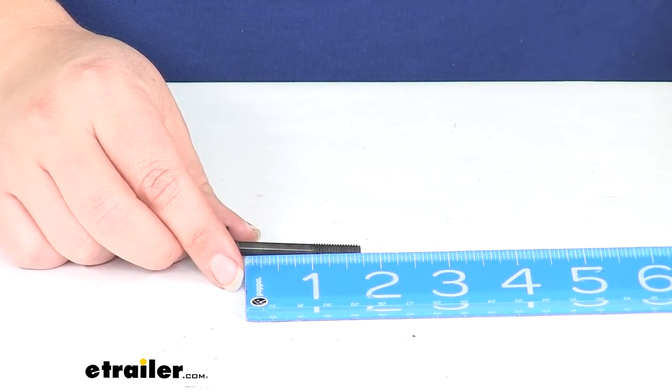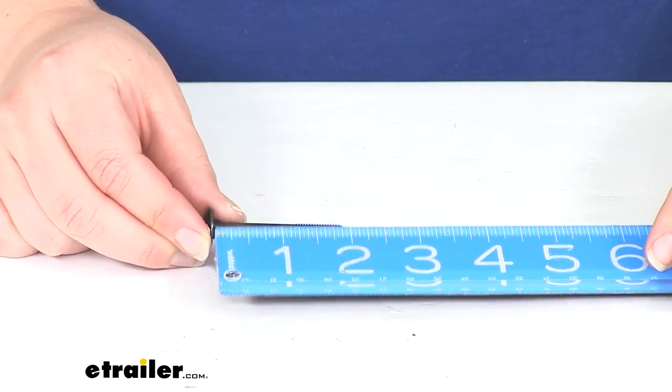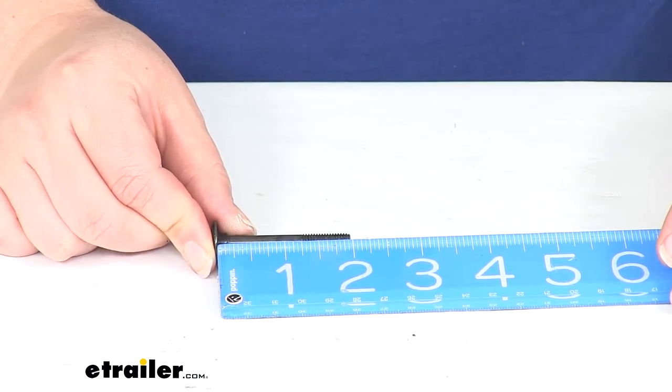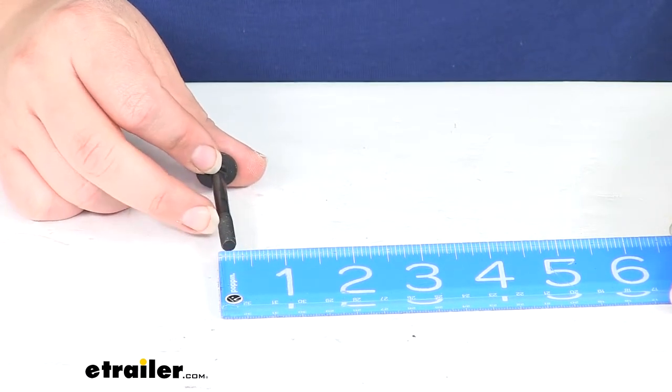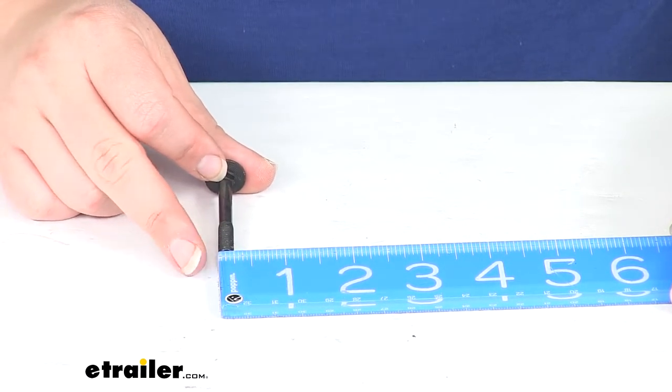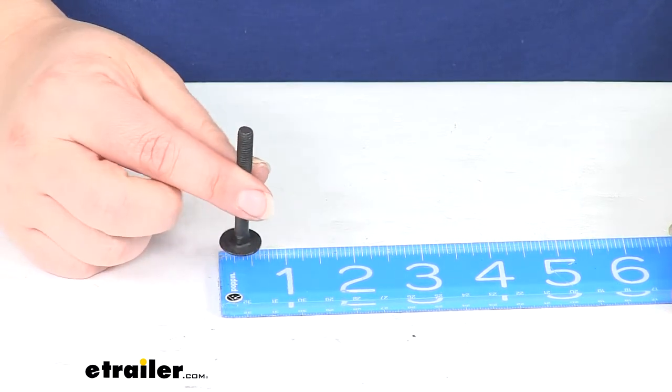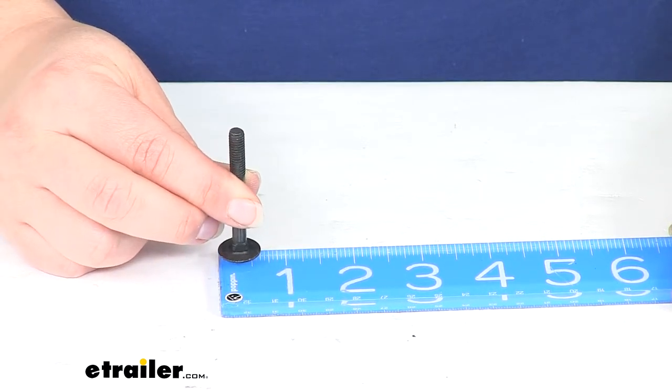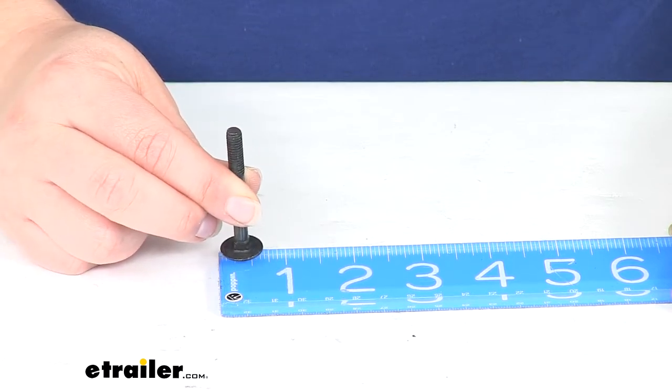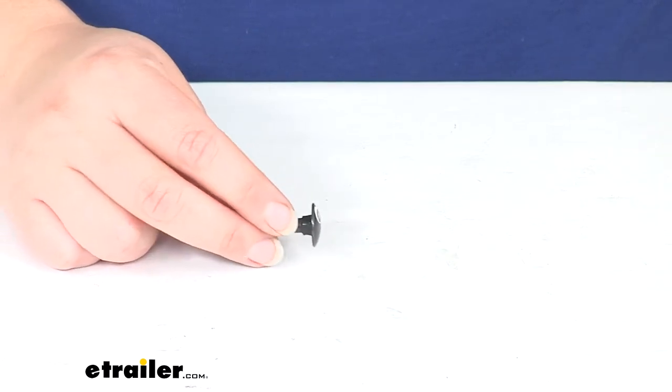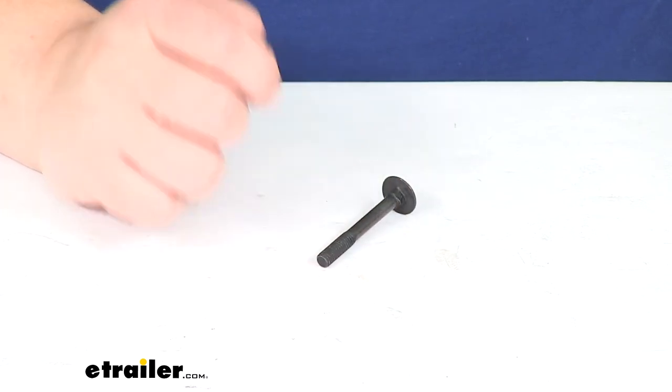So if we measure from the top down, this bolt is 2 inches long. And in Imperial, it's about a quarter of an inch in diameter. The head of the bolt is about 5 eighths of an inch in diameter. And that's just for reference there, just so you know.